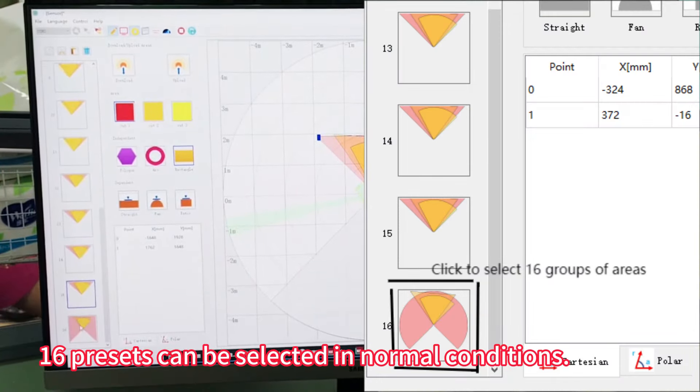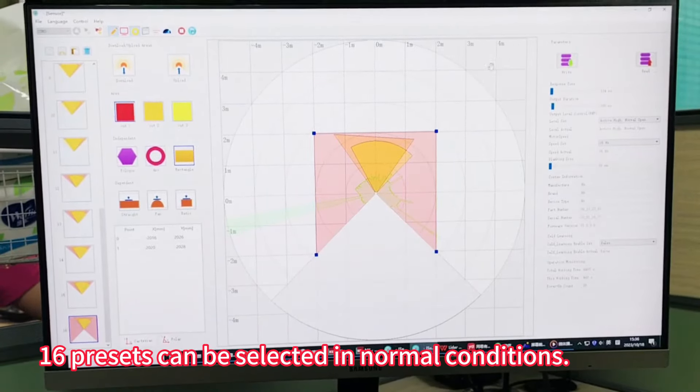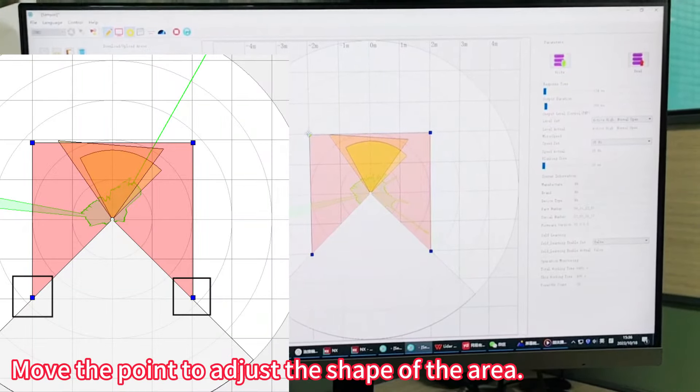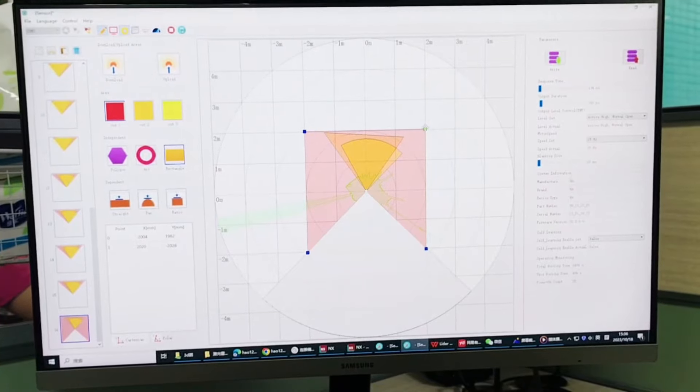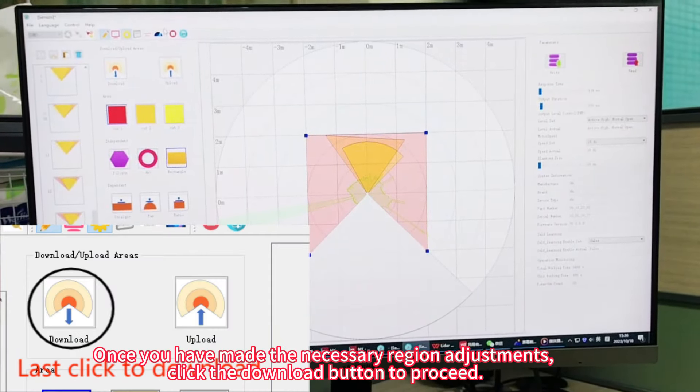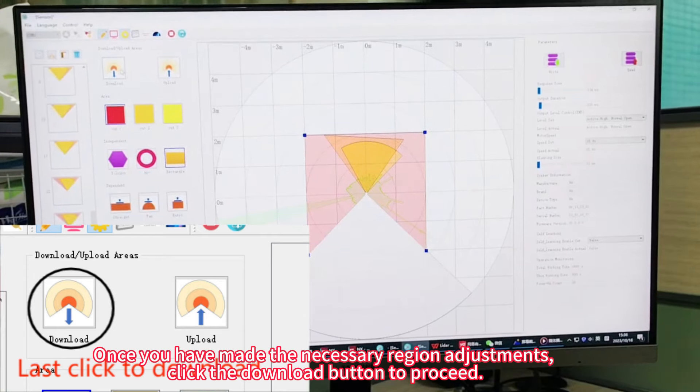Presets can be selected in normal conditions. Move the point to adjust the shape of the area. Once you have made the necessary region adjustments, click the download button to proceed.